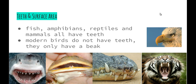Fish, amphibians, reptiles and mammals all have teeth. Modern birds, however, do not have teeth — they only have a beak. Over evolution, birds used to have very small teeth, but over time those teeth became useless. With evolution and natural selection, those teeth have been removed and birds just have a beak.